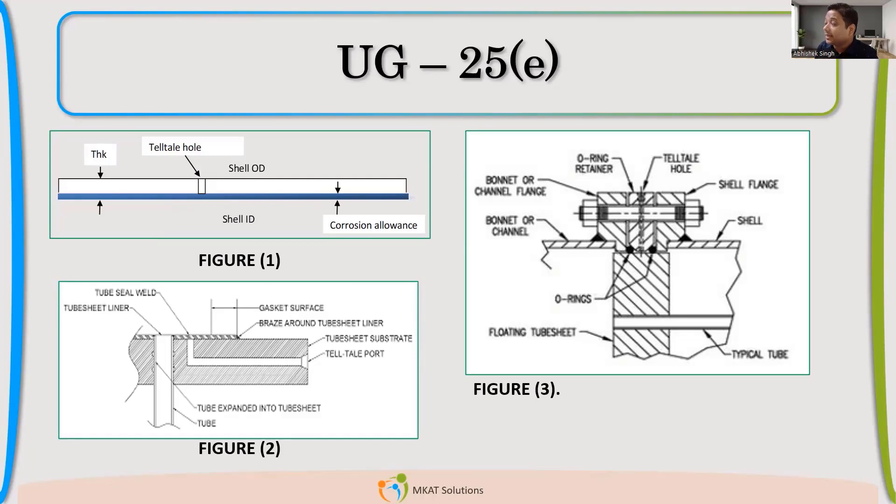So Ranjit is also writing that escaping the arrested air during the welding - that is a vent hole, that is not actually the telltale hole. That is also a hole which is very similar to this, but the purpose is to remove the air which is entrapped. So first use is to tell the Corrosion, you saw it in the figure one.